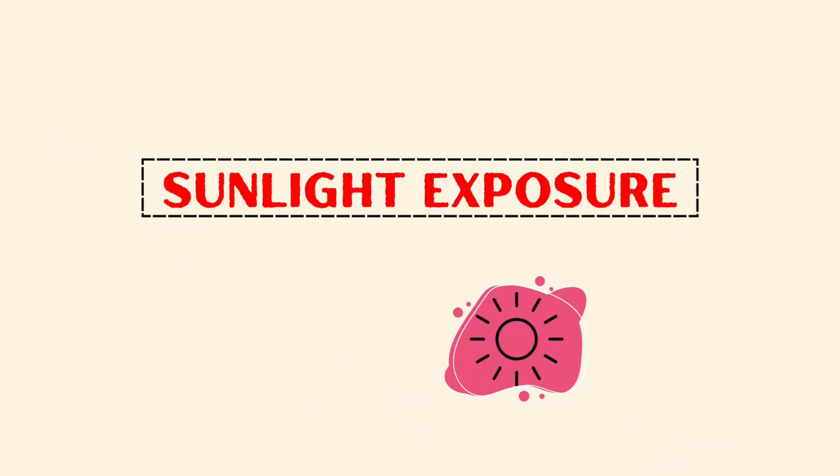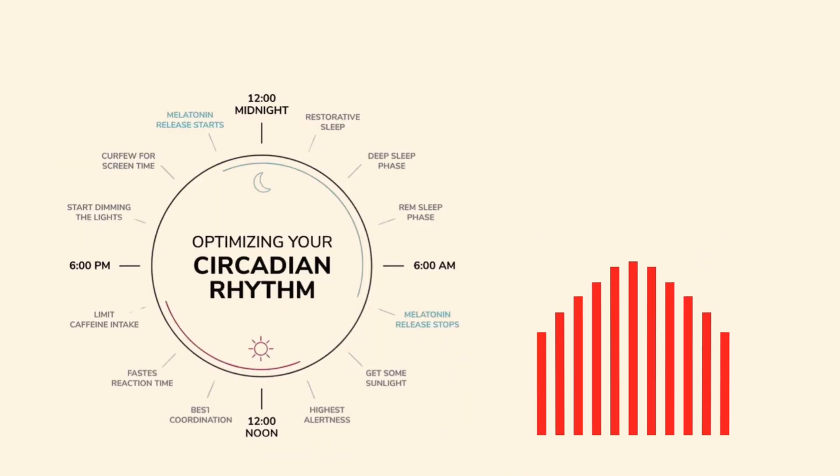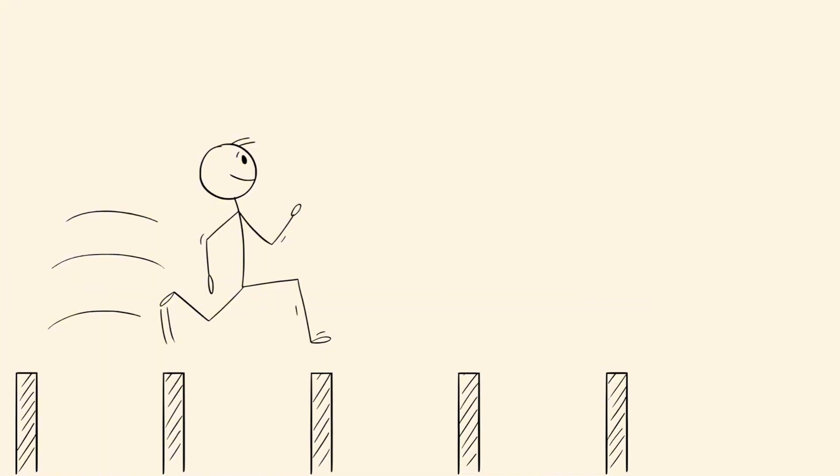Sunlight exposure, the natural brain charger. Every morning, Ethan steps into the sunlight for 5 to 10 minutes. Natural light in the morning anchors his circadian rhythm, boosts serotonin, and primes his brain for an energetic, focused day.